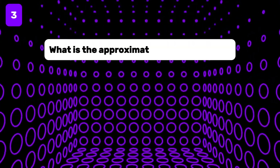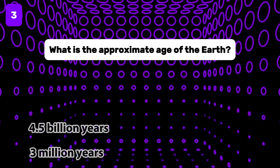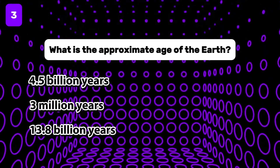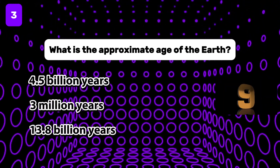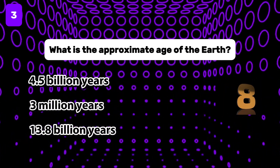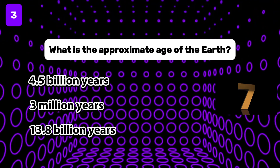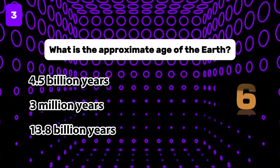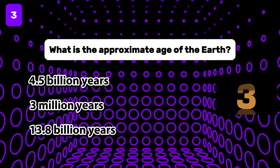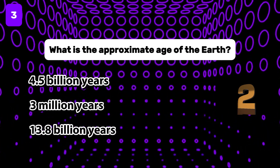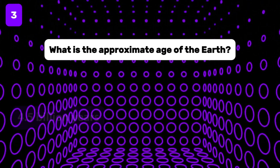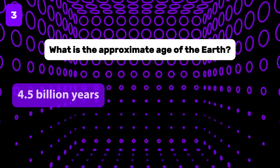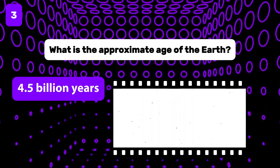What is the approximate age of the Earth? The answer is 4.5 billion years.